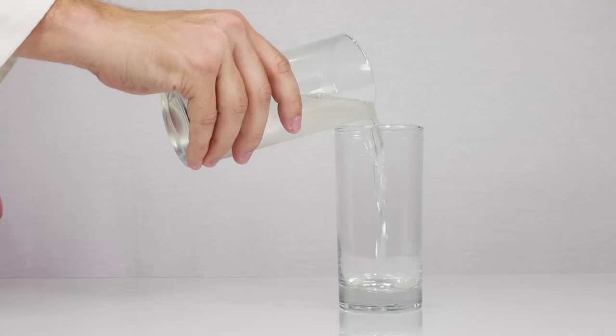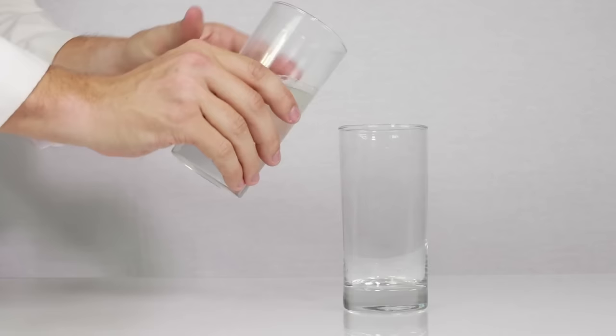Triiodide reacts with starch to create a darkly colored compound. However, this reaction is only allowed to take place once another chemical reaction has run its course.